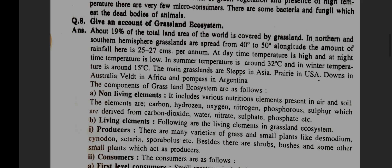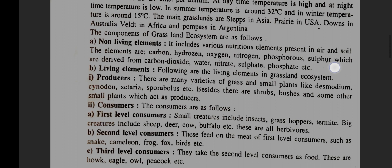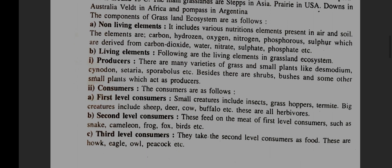The main grasslands are steppes in Asia, prairie in USA, downs in Australia, veld in Africa, and pampas in Argentina. The components of a grassland ecosystem are as follows. Non-living elements: it includes various nutritional elements present in air and soil.